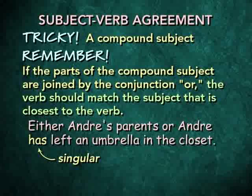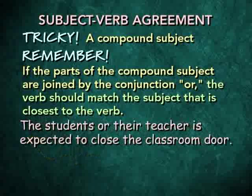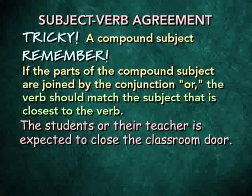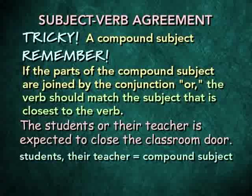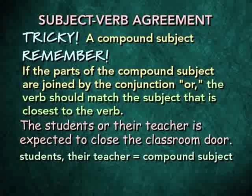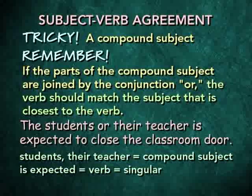One more example: 'The students or their teacher is expected to close the classroom door.' Here we have two subjects separated by OR — 'students,' which is plural, and 'their teacher,' which is singular. Since 'their teacher' is closer to the verb, the singular 'is expected' is correct. It matches up with 'their teacher,' which is also singular. When the compound subject consists of two or more parts separated by OR, decide on subject-verb agreement by looking at the subject that's closer to the verb.